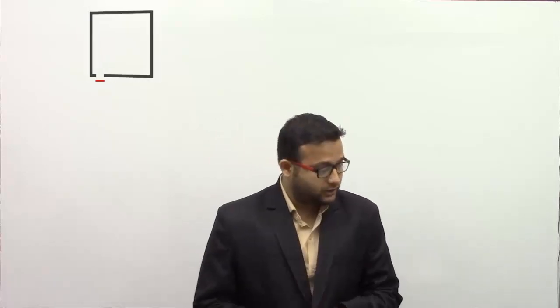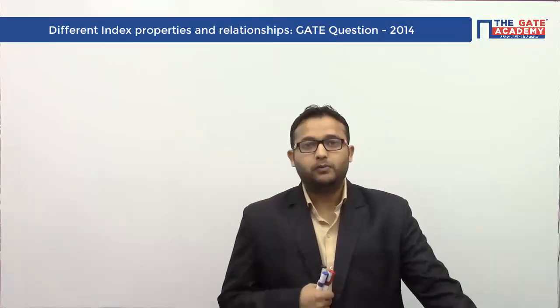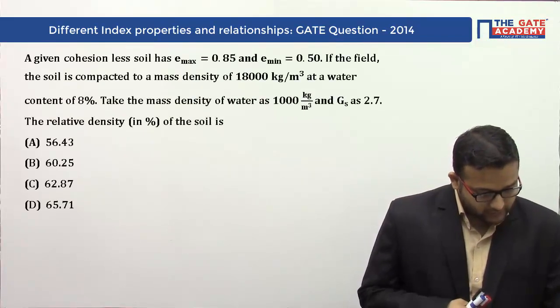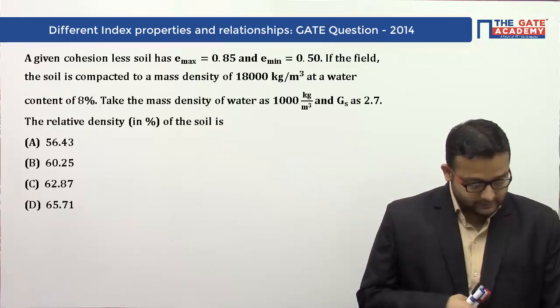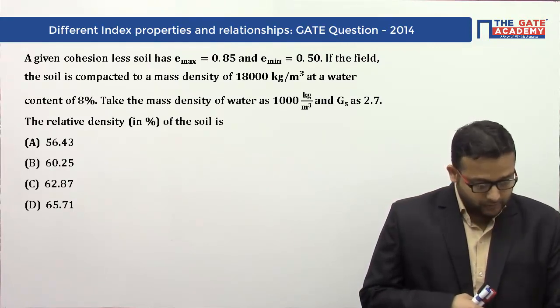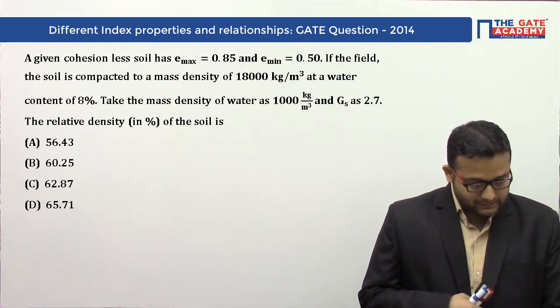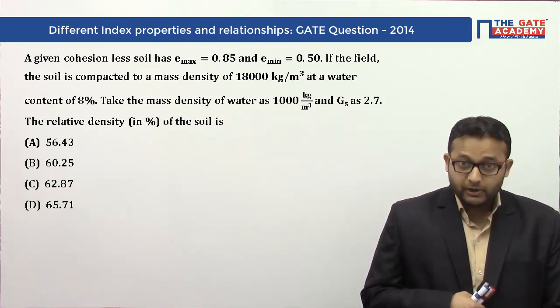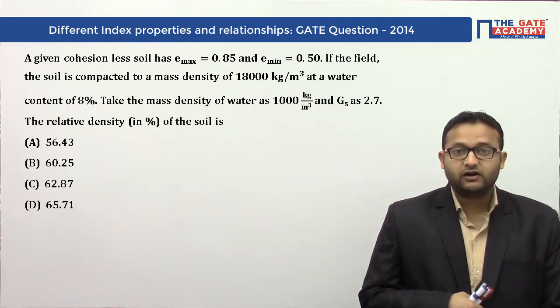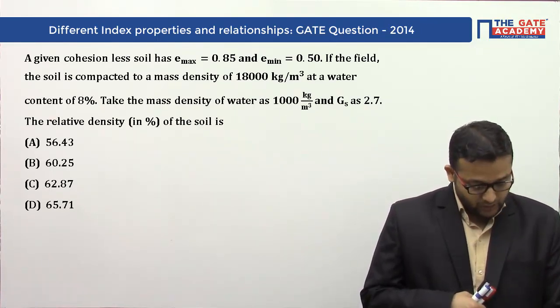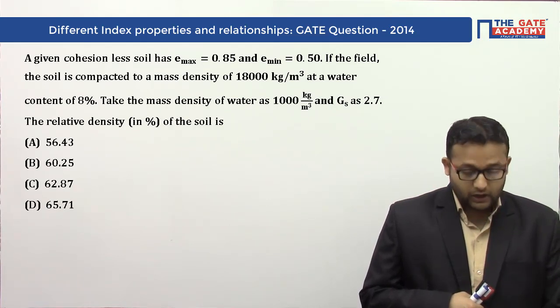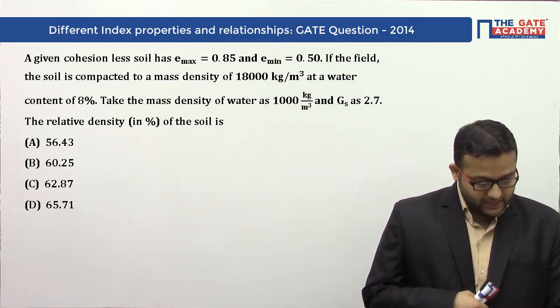Today we will solve a problem asked in GATE 2014 for two marks in Civil Engineering from Geotechnical Engineering. The problem is: a given cohesionless soil has e_max = 0.85 and e_min = 0.5. In the field, the soil is compacted to a mass density of 1800 kg/m³ at a water content of 8%. Take the mass density of water as 1000 kg/m³ and G_s as 2.7.